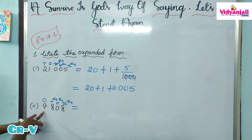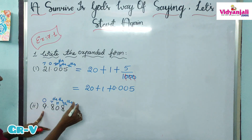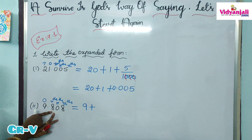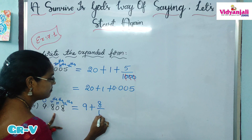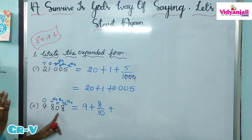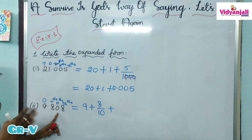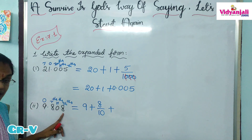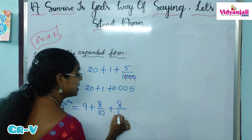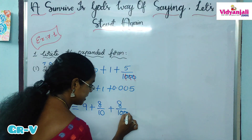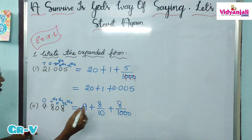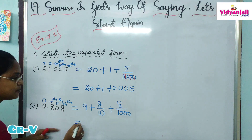The place value of 9 is in the 1's place, so 9. Place value of 8 is in the 10ths place, so 8 by 10. In the 100ths place we have 0, so we can avoid it. And then 8 is in the 1000ths place, so 8 by 1000. So the fractional expansion is complete.